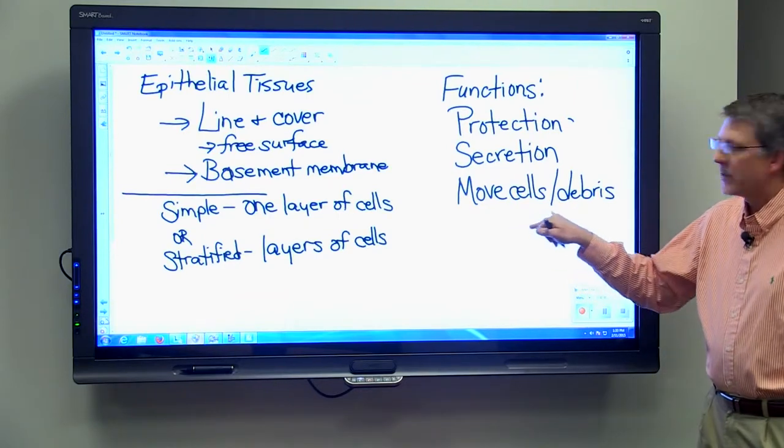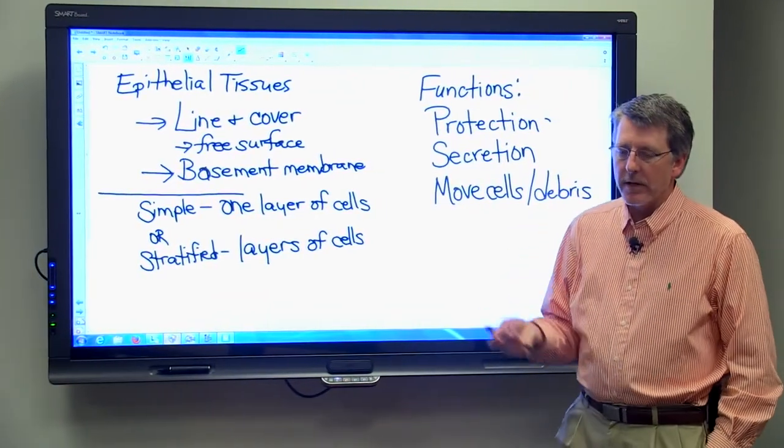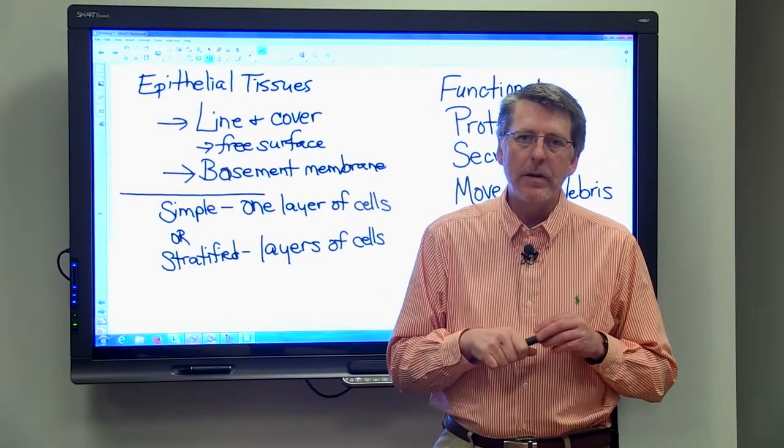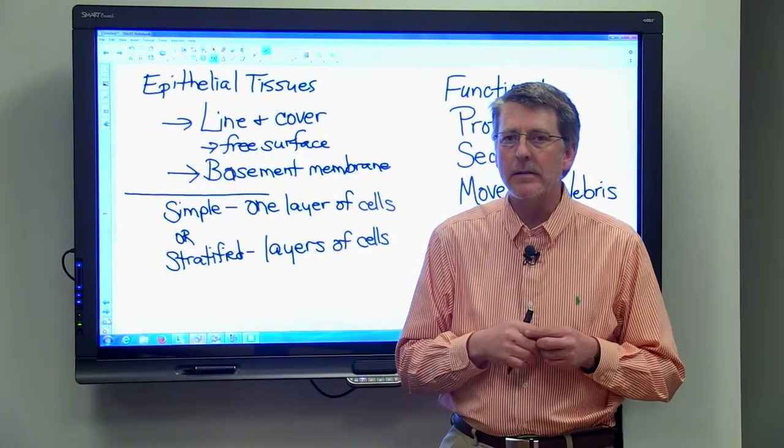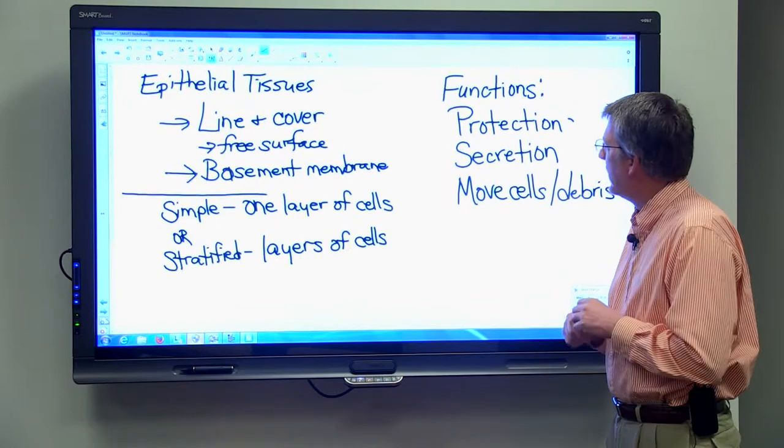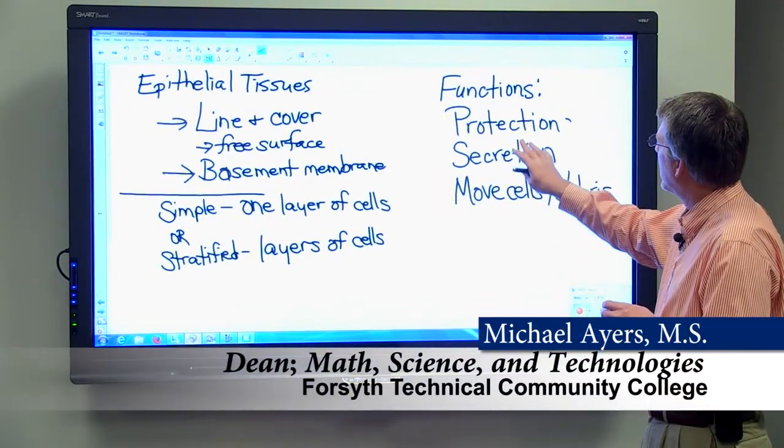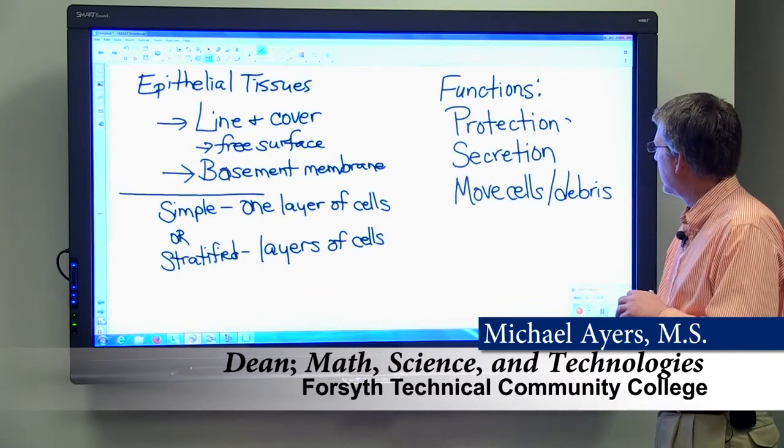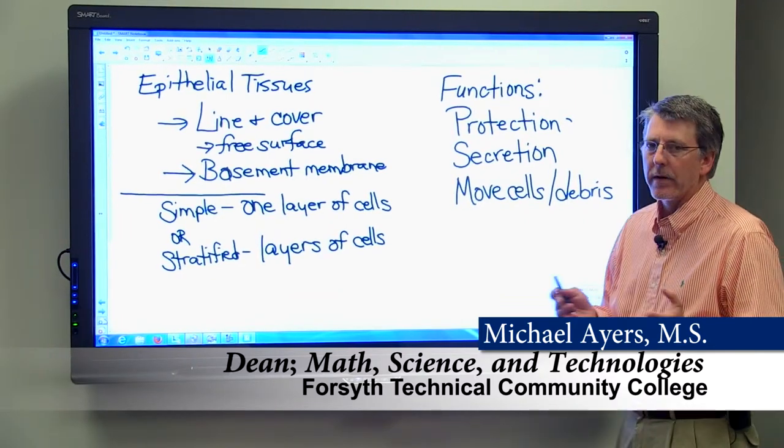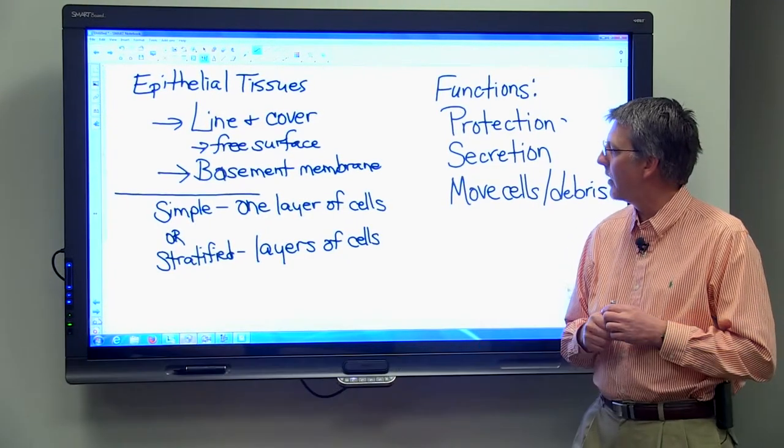Epithelial tissue can also be involved with moving cells or debris and we'll look at some examples of that. The lining of the fallopian tubes or the uterine tubes, for example, contains a ciliated epithelial tissue that helps to move the egg cell gently down towards the uterus. So protection, secretion, and moving cells and debris are all examples of what epithelial tissue is involved with.